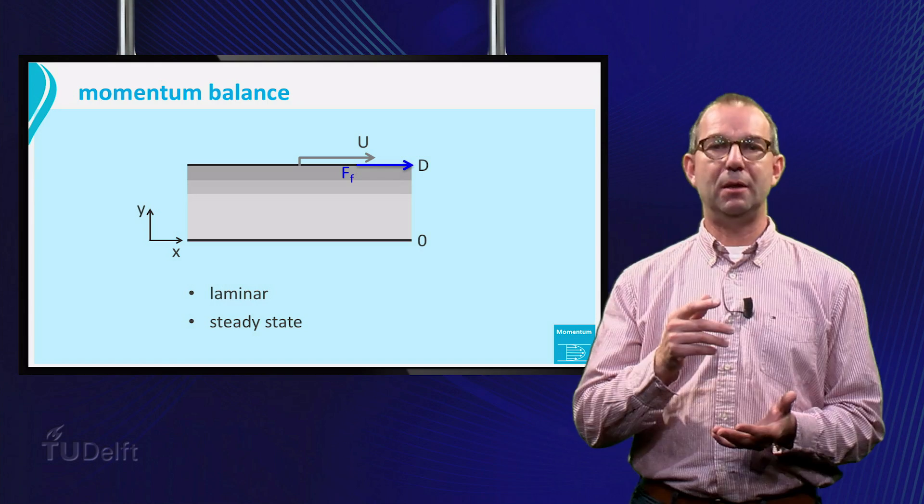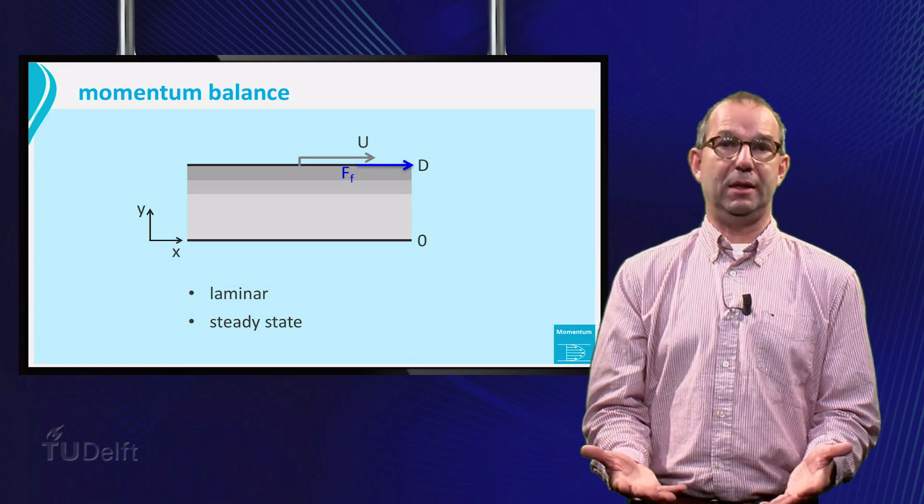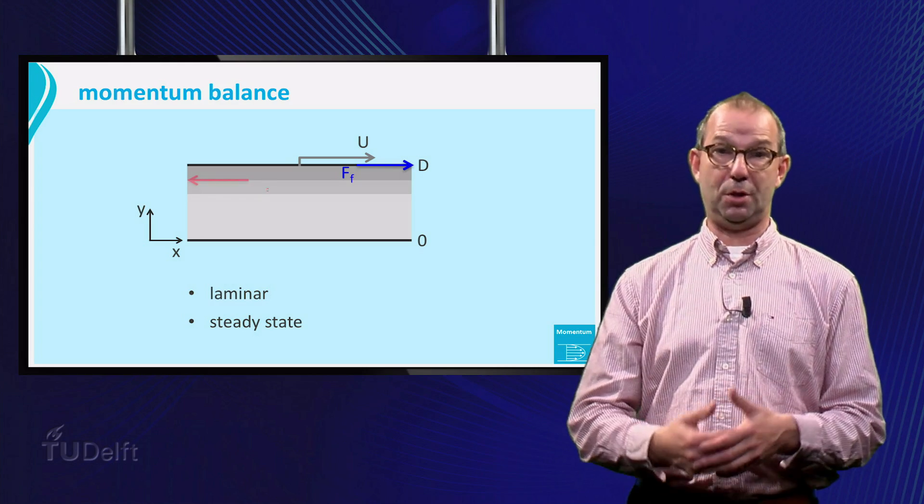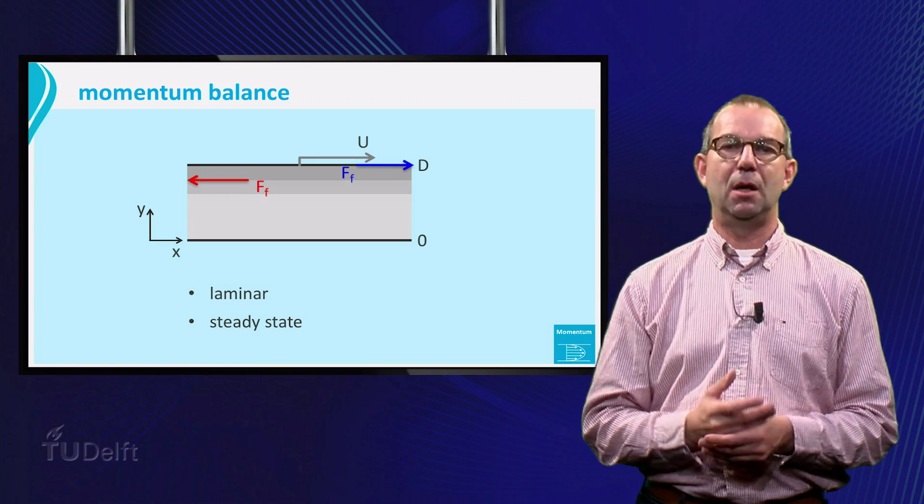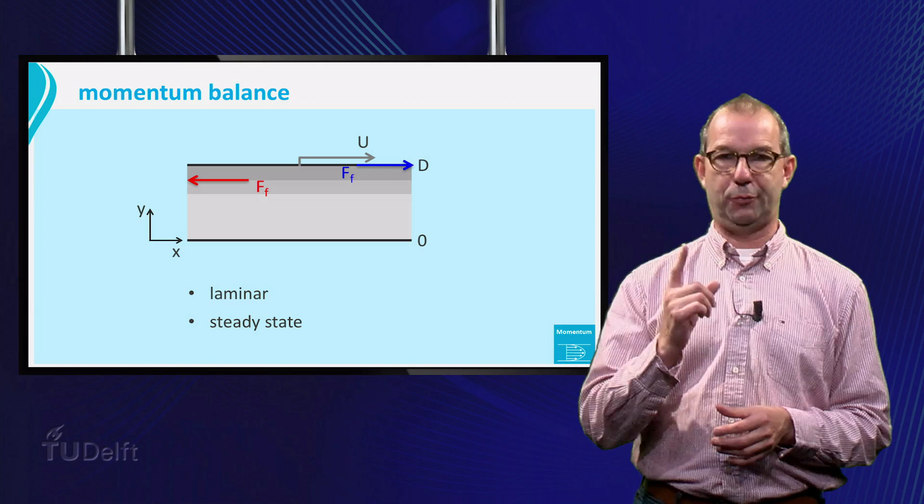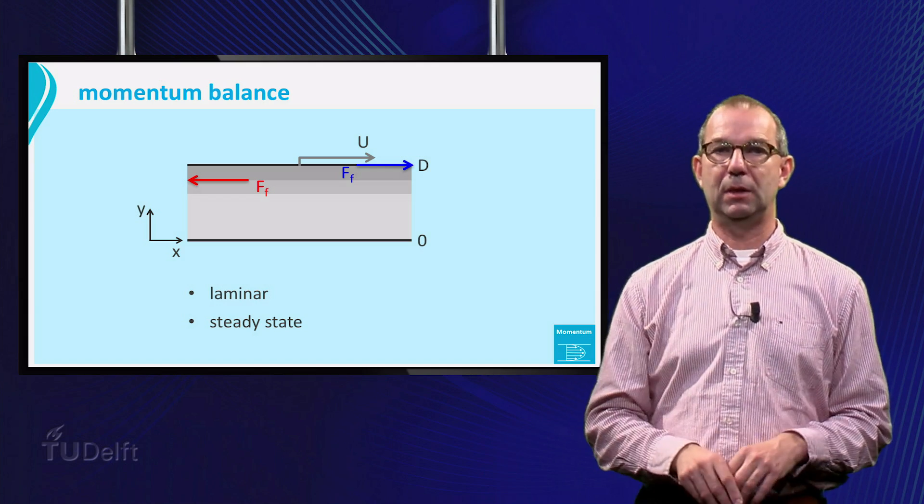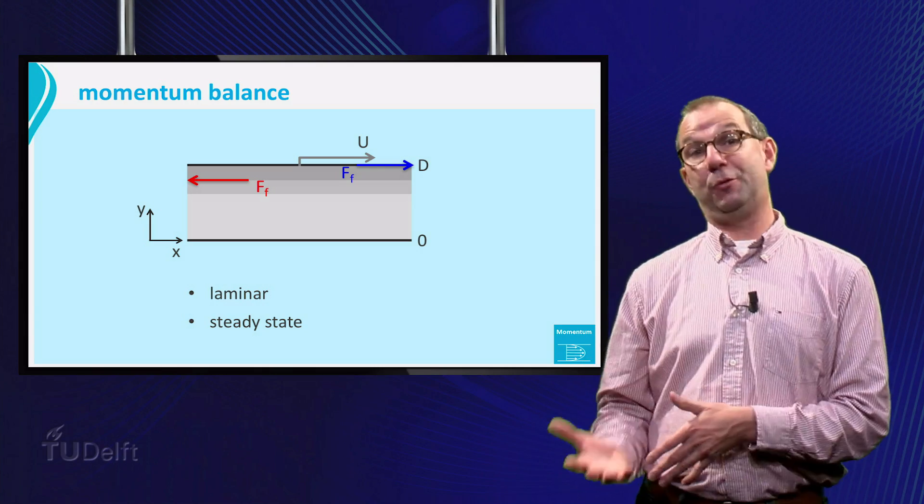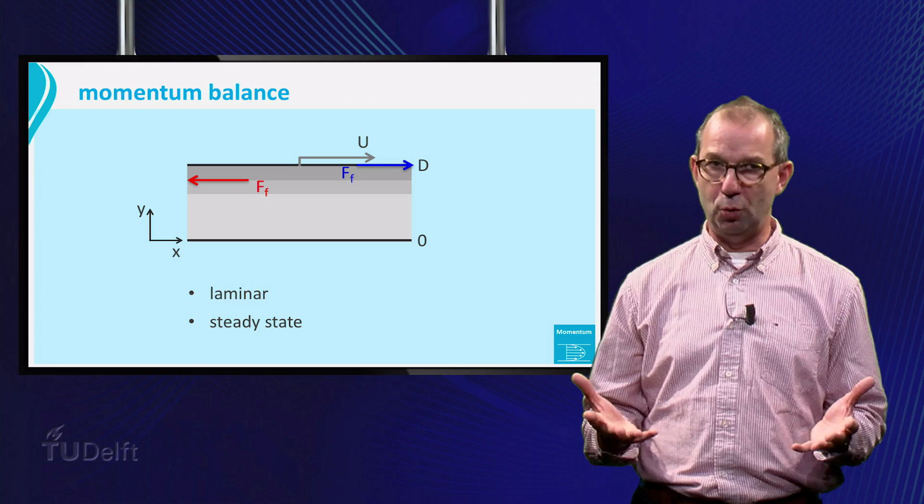But then it kind of slides over the layer just below it, and consequently that lower layer will exert a frictional force in the negative x-direction. Via Newton's action is minus reaction, the top layer will itself exert a friction force in the positive direction on the lower layer, and that layer will also have to move. And so on, until all fluid layers move.